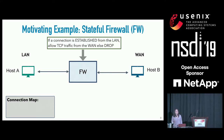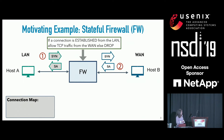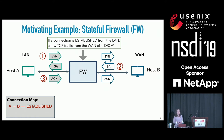Let's look at this policy in action. Host A wants to establish a connection with B, so it sends a SYN packet, which is forwarded by the firewall. B responds with a SYN-ACK, followed by A responding with an ACK packet. At this point, the connection map registers that the connection from A to B is established, meaning when B sends a data packet to A, it will be passed by the firewall and not dropped.